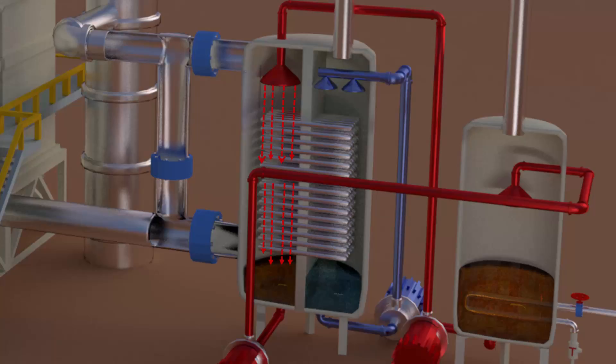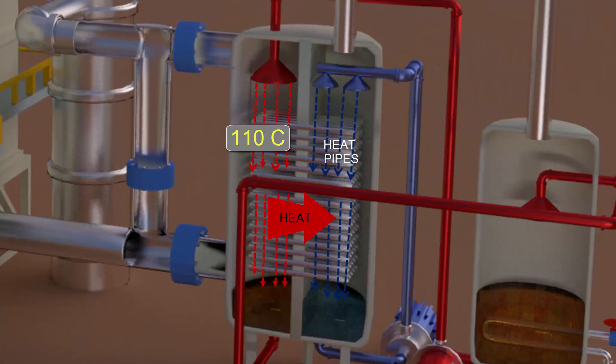In transitioning from gas to liquid, this water releases the latent heat of evaporation. A bank of heat pipes conduct that heat to the adjacent chamber. Here, pure water is circulated and sprayed over the other end of the same heat pipes.